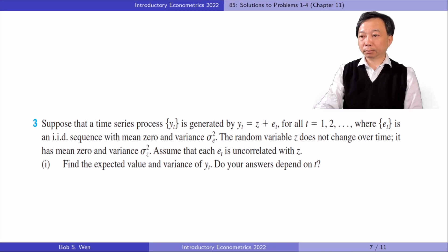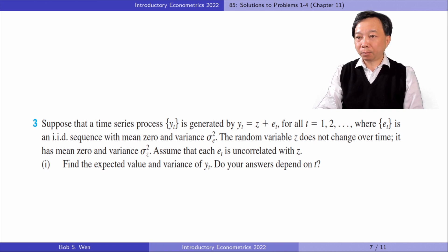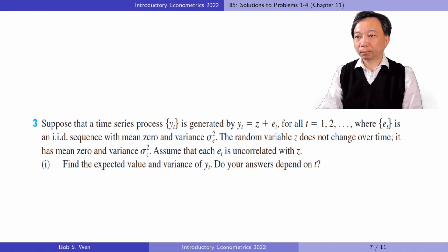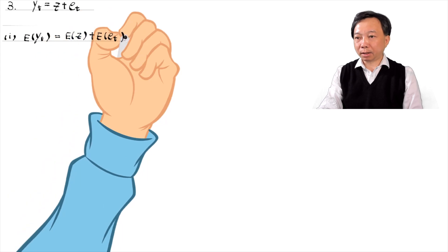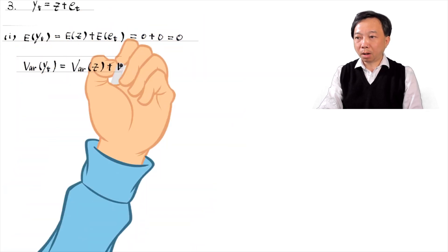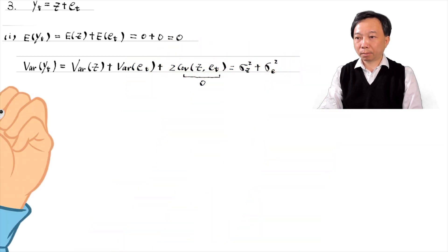Let's find answers to problem three. Suppose that a time series process Yt is generated by Yt equals Z plus Et, where Et is an IID sequence with mean zero and variance sigma E squared. The random variable Z does not change over time; it has mean zero and variance sigma Z squared. Assume that each Et is uncorrelated with Z. In part one, find the expected value and variance of Yt. The expected value of Yt is zero. The variance of Yt is the sum of sigma Z squared and sigma E squared. They do not depend on T.